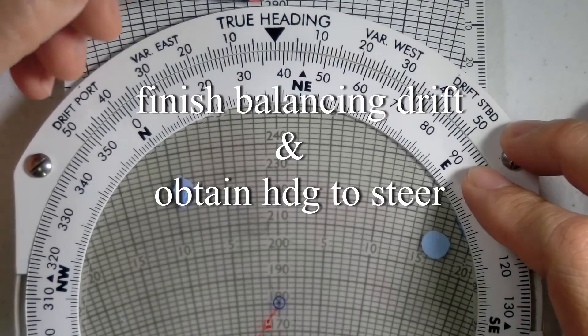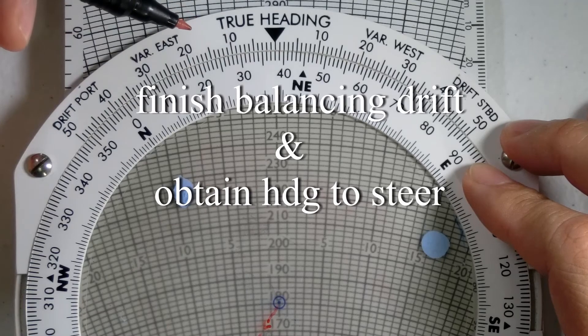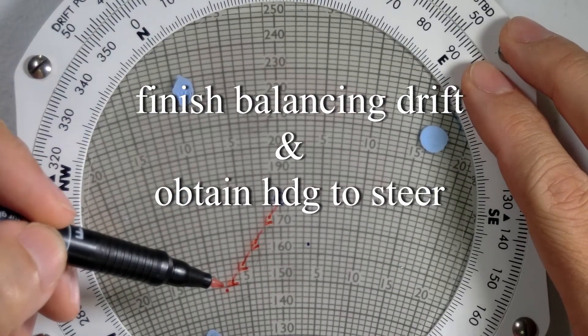So, the heading to fly now will be 35, 36, 37, 38, 38 degrees. Why? Because I've balanced my drift.